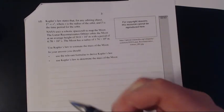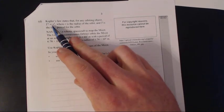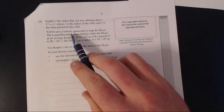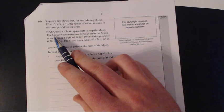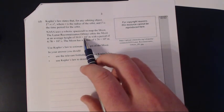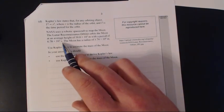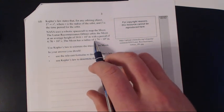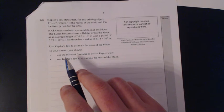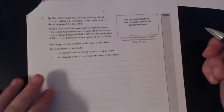Question 4. Let's have a read. Kepler's law states that for any orbiting object, time or the period, so time of rotation squared, is roughly equal to the radius cubed. Where r is the radius of the orbit, and t is the time for the period of the orbit. So NASA used the robotic spacecraft to map the moon. Lunar reconnaissance orbiter orbits the moon at an average height of 50 times 10 to the 3. That's an awkward way to write it. It should be 5 times 10 to the 4 metres. That's going to trip you up. With a period of 6.78 times 10 to the 3 seconds. So, 6780 seconds. And the moon has a radius of 1.74 times 10 to the 6. Use Kepler's law to estimate the mass of the moon. In this answer you should derive Kepler's laws and use Kepler's laws to determine the mass of the moon. So first off, we need to derive Kepler's laws.